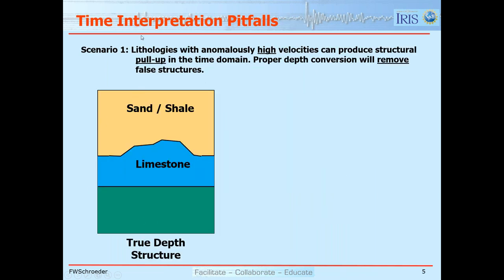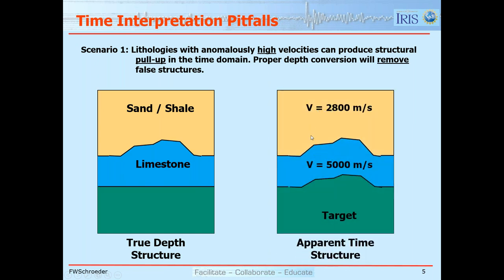There are pitfalls when interpreting seismic on a vertical scale of two-way travel time. If we have lithologies with anomalously high velocities, such as limestones, we can get pull-up in the time domain. To get a proper depth conversion, we have to remove that pull-up, which could give us a false structure. Here we have a true depth structure — assigning velocities and calculating two-way travel time, the boundary between tan and blue is accurate, but the boundary between blue and green, which should be flat, is artificially pulled up. If you thought you had an anticline target, you would find that was not correct.